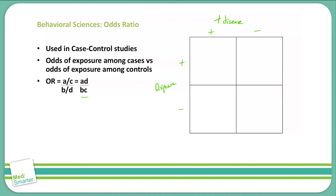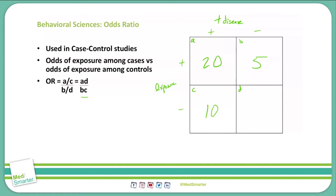We assign each group to a box labeled A, B, C, and D. The 20 patients with cancer who had exposure to smoking go into box A — positive disease, positive exposure. The 5 healthy patients with no cancer but exposure to smoking go into box B — negative disease, positive exposure. The 10 patients with cancer but no smoking history go into box C — positive disease, negative exposure. Finally, 20 patients with no cancer and no exposure go into box D.